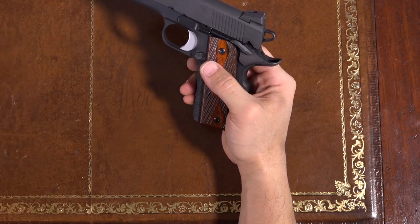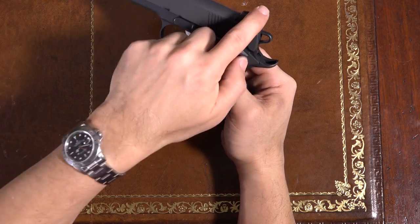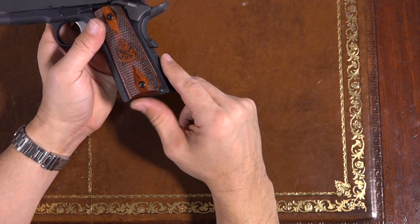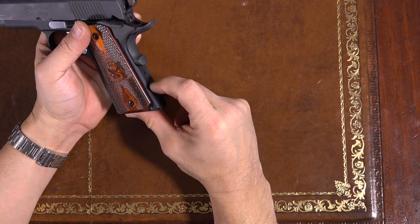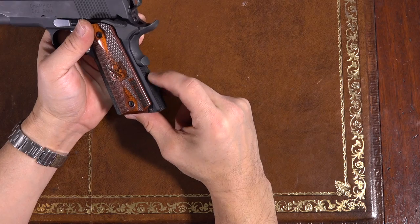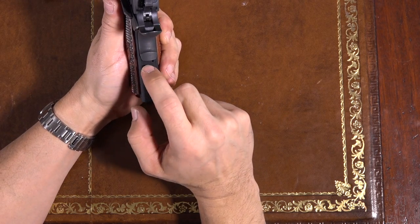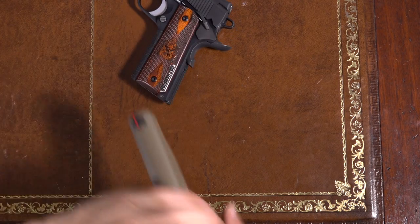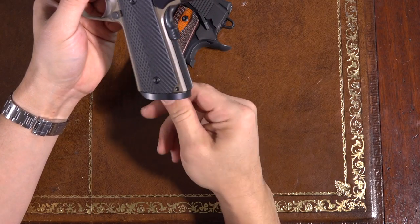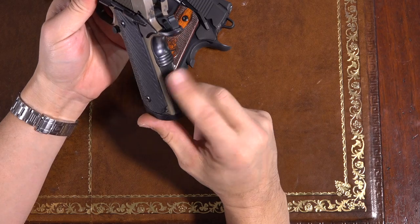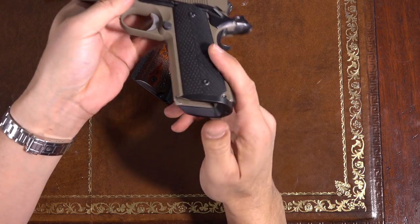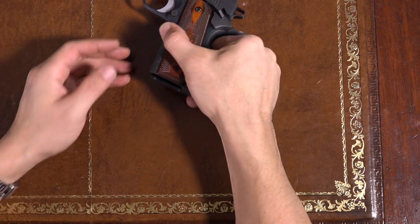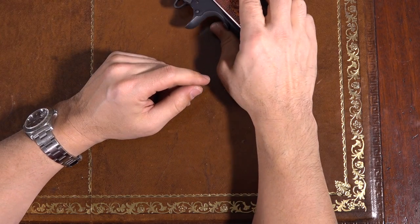So replace the trigger. That was just for aesthetics more than function. Replace the sights, replace the grips. I will probably be putting an Ed Brown magwell on here, again, for my kind of action pistol-y type events, which will mean that I'll be ditching the ILS system because I'll be replacing this mainspring. So most likely this is the magwell that I'll, or one like this that I'll be putting on there. It's just an Ed Brown two-piece magwell and have to replace the guts of the mainspring housing when I do that because it's not compatible with the ILS system.